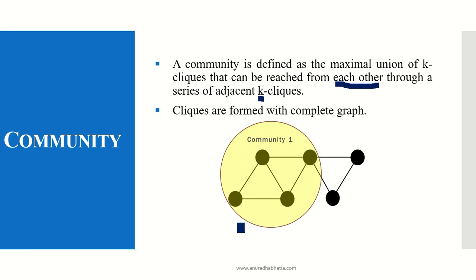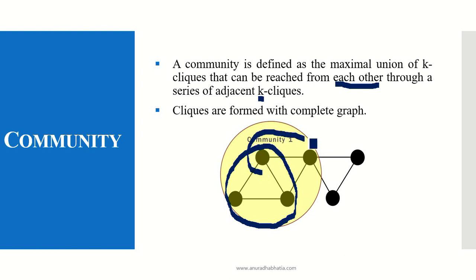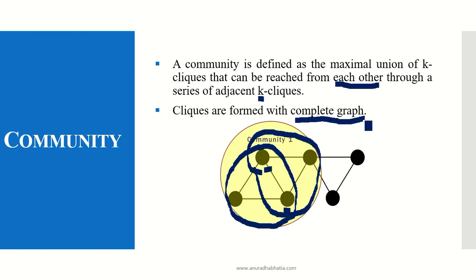We see over here this community is formed as a formation of 2 cliques. The 1st clique which was formed is this and the 2nd clique which is formed is this. The common node between the 2 is either this node or this node. There has to be a common node between the 2 cliques to form a community. The community cannot be formed if there is no common node. Also, a clique is formed only from a complete graph, which is why in this definition of community, clique is also mentioned.